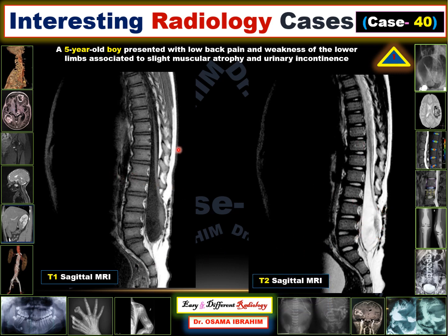What is the abnormality in this five-year-old boy presenting with urinary incontinence? If you look at the spinal cord, it has an abnormal position and there is thickening of the filum terminale. There is also widening of the spinal canal and a suspected defect in the posterior element of the bony component of the lower lumbar vertebra.